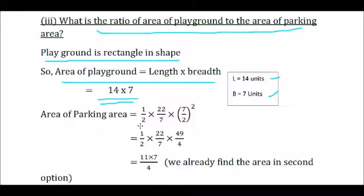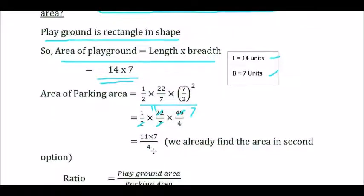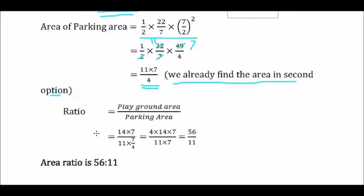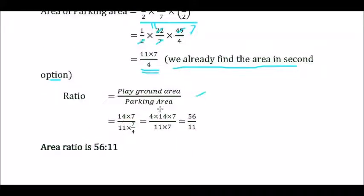Area of parking area, already found, is 1/2 × 22/7 × (7/2)² = 11 × 7/4. The ratio equals playground area divided by parking area = (14 × 7) ÷ (11 × 7/4) = 4 × 14 × 7 ÷ (11 × 7) = 56/11. Therefore, the ratio of area of playground to parking area is 56:11.